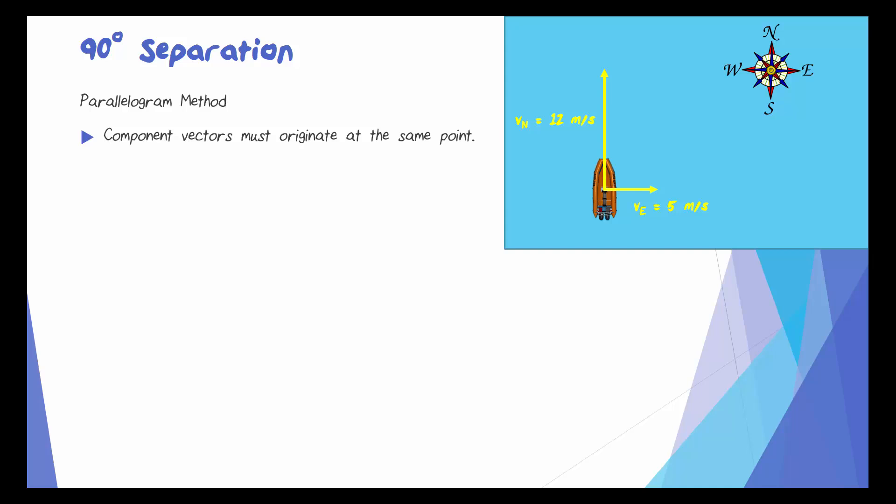They both start on the boat. The next thing that you do is draw dashed lines from the tips of the arrows in order to create a parallelogram. In case you don't remember what a parallelogram is, it's a four-sided shape in which opposite sides are parallel to one another. We can draw these dashed lines to create a parallelogram.